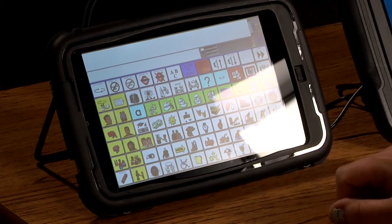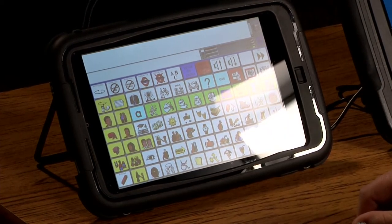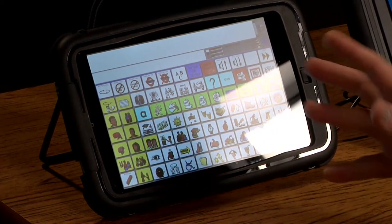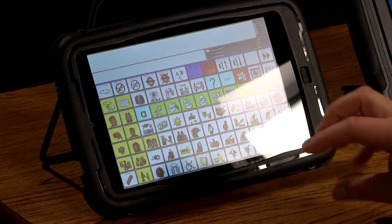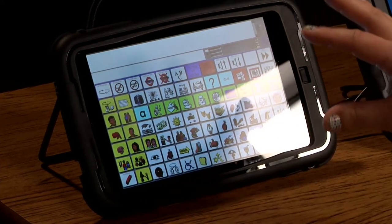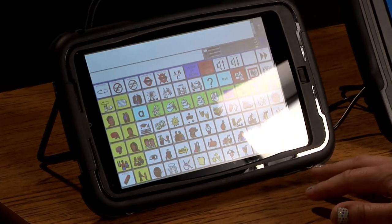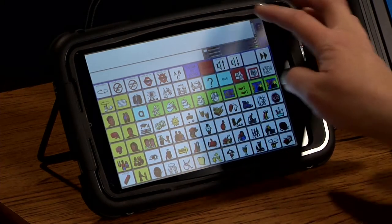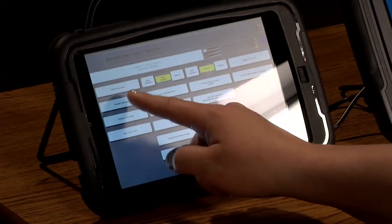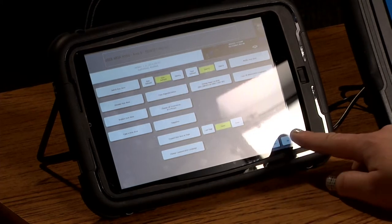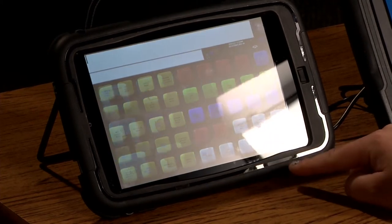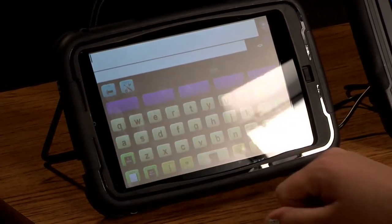One more thing I'd like to share with you on this device before we move to the Accent 1000 are a couple of features that allow us to enhance the visual outlook of the screen. So let me go ahead and show you this. The language program I'm going to demo now is called Essence.